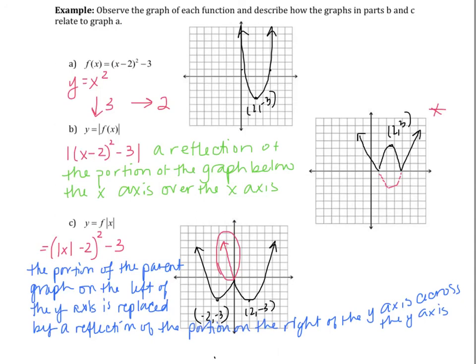Okay, so part b, we have a reflection of the portion of the graph below the x-axis over the x-axis. And part c, we have the portion of the parent graph on the left of the y-axis is being replaced by a reflection of the portion on the right of the y-axis across the y-axis. So you should be able to describe in words what you're seeing happening in these graphs. So make sure you write that down, and I will see you in class tomorrow to do lots of fun graph translating.